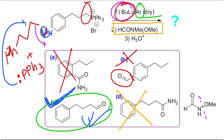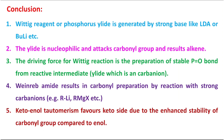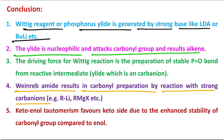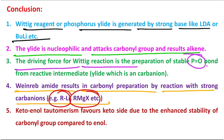In conclusion, what you have learned today: a Wittig reagent or phosphorus ylide is generated by treatment of a phosphonium salt with strong bases like LDA or butyl lithium. The ylide is nucleophilic in nature and it attacks a carbonyl group, which results in an alkene. Or, if you think of the Weinreb amide as producing a carbonyl by reaction with strong carbanions like RLi or RMgX, the driving force for the Wittig reaction is the preparation of a stable phosphorus–oxygen bond from the reactive ylide intermediate.